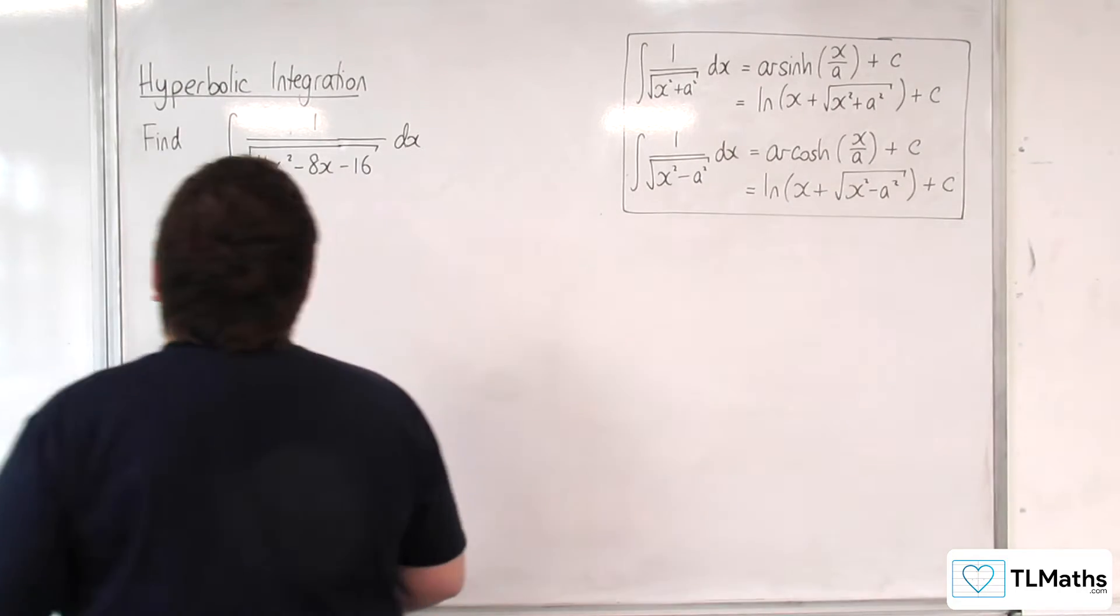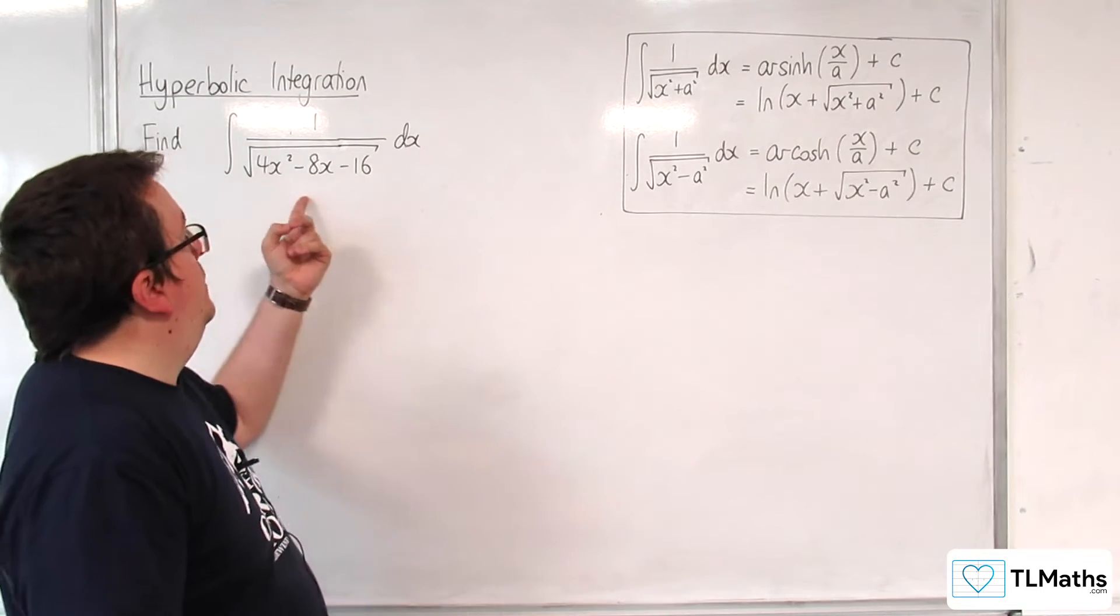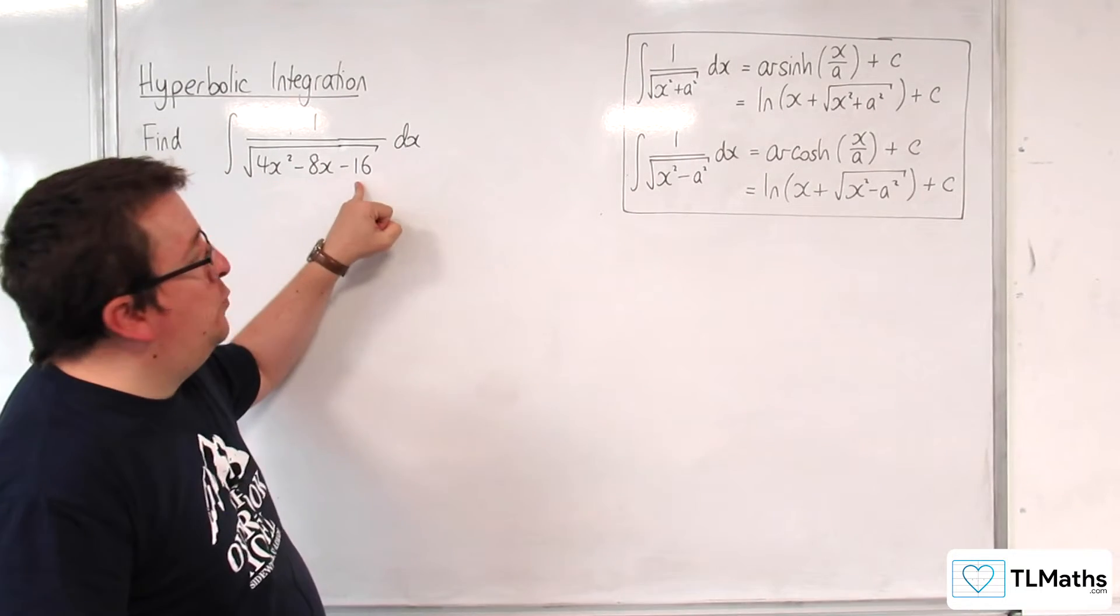So, what we need to do with examples like this is to complete the square with the denominator, well, within the square root sign.